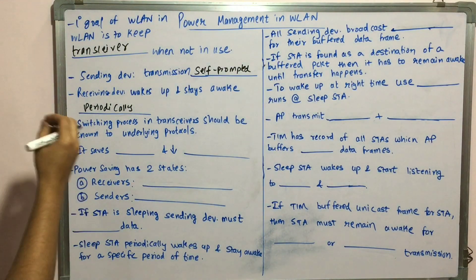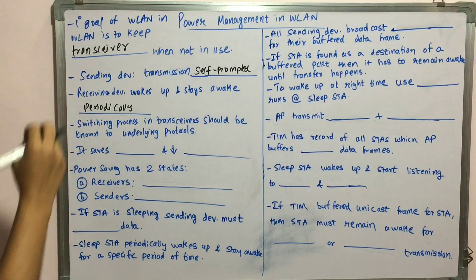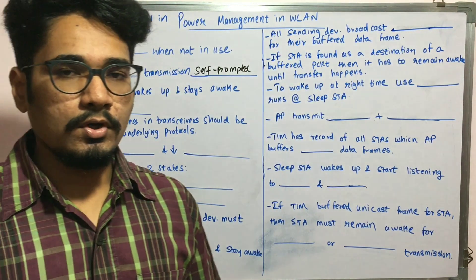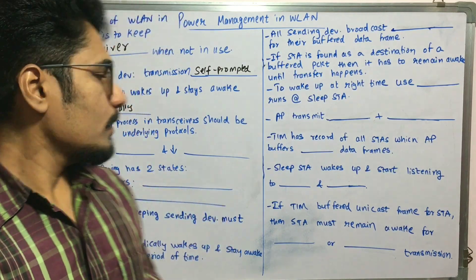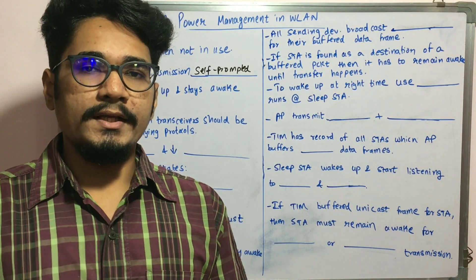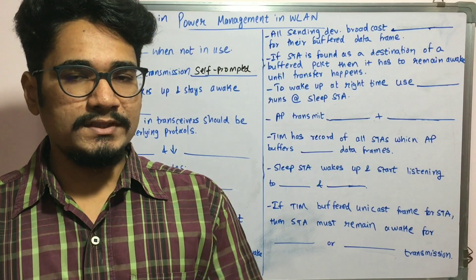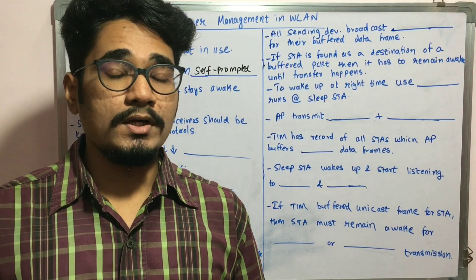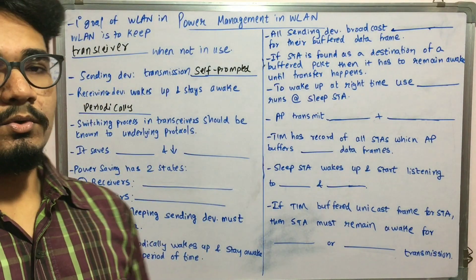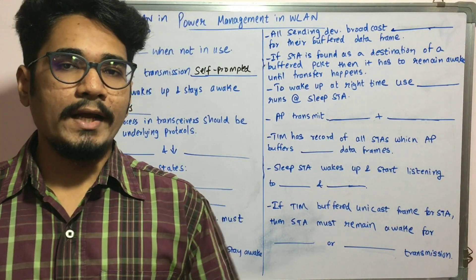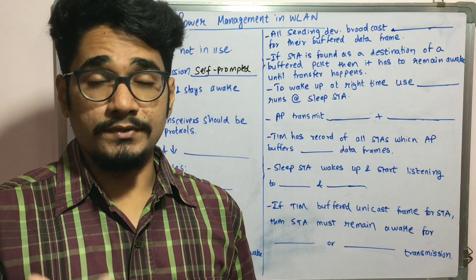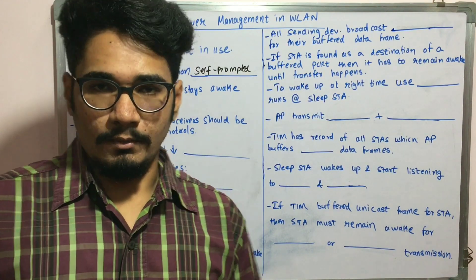The switching process that happens in power management should be transparent to the underlying protocols in 802.11 systems — for example, TCP/IP, DHCP, or other protocols. These protocols should be aware of what kind of switching mechanism is used. If they don't know what switching process is being done, they cannot efficiently handle the switching process.